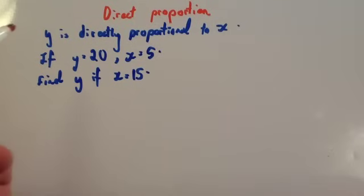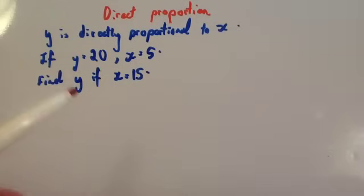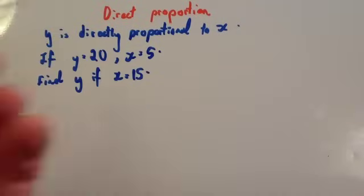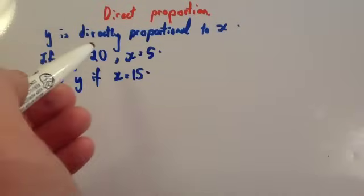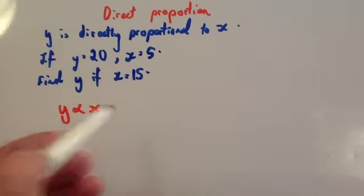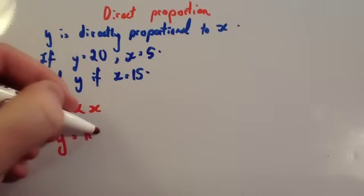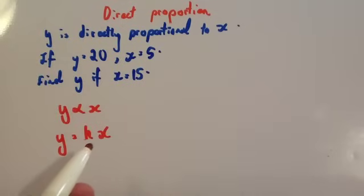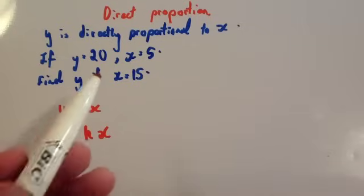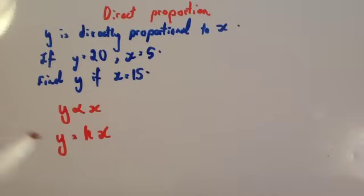Let's have a look at our first example. Y is directly proportional to X. If Y equals 20, X equals 5. Find Y if X equals 15. To solve this, first write: Y is proportional to X. Then replace the proportional sign — write Y equals K times X. K is the constant of proportionality; it's the number that stays constant throughout the question. We use the first pair of numbers to work out what K is, then use the formula for any other part of the question.